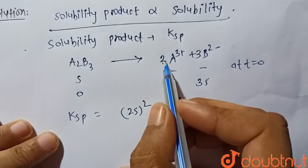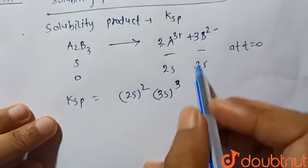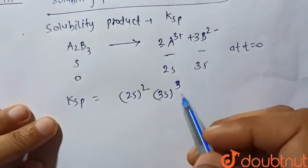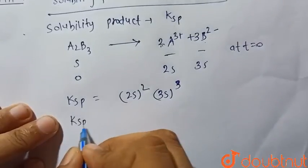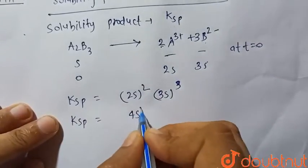Because here the stoichiometric coefficient of A is 2, and (3S) cubed because the stoichiometric coefficient of B is 3. So Ksp will be equal to 4S squared times...